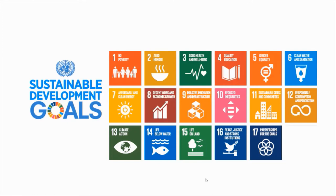The 17 Sustainable Development Goals are: no poverty, zero hunger, good health and well-being, quality education, gender equality, clean water and sanitation, affordable and clean energy, decent work and economic growth, industry innovation and infrastructure, reduced inequalities, sustainable cities and communities, sustainable consumption and production, climate action, life below water, life on land, peace, justice and strong institutions, and partnerships for the goals.